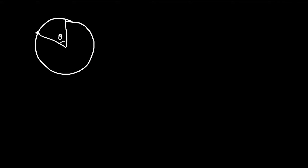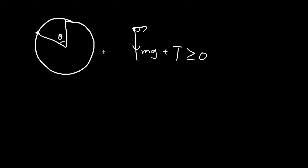Using this condition, we can find the speed of this particle at the very top. When the particle travels to the very top, it goes in circular motion. The centripetal force is contributed by gravity and the tension of the rope. Since the string never goes slack, the tension is always greater than or equal to zero. For the minimum speed case, tension equals zero, so the centripetal force is entirely given by gravity, mg. Therefore, v equals the square root of rg.